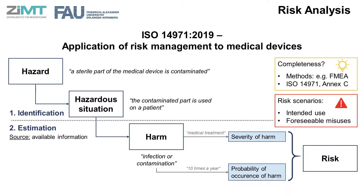It is not an easy job to cover all the risks in the analysis, especially with consideration of risks arising from different life cycle phases. Systematic methods like Failure Modes and Effects Analysis (FMEA) can be helpful at this point. ISO 14971 also lists examples of hazards in Annex C, which can be used as a reference for a particular risk analysis. It is important to note that ISO 14971 explicitly states that the risk analysis should not only be applied to the intended use — foreseeable misuses should also be taken into account.